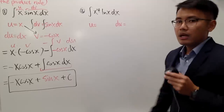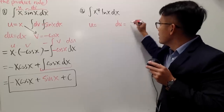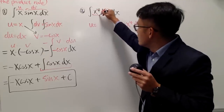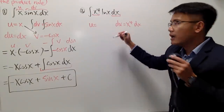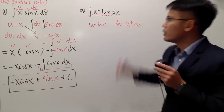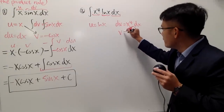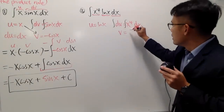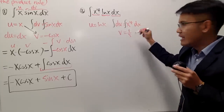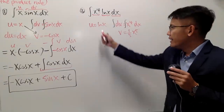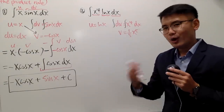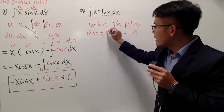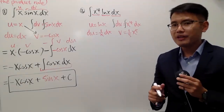Let's switch the choices. For dv I'll use x⁴ dx — I know I can integrate that. So dv = x⁴ dx, and u = ln(x). To find v I integrate both sides: the integral of x⁴ is (1/5)x⁵, so v = (1/5)x⁵. To find du I differentiate u = ln(x) on both sides: du = (1/x) dx. Now I have all the ingredients to finish this.